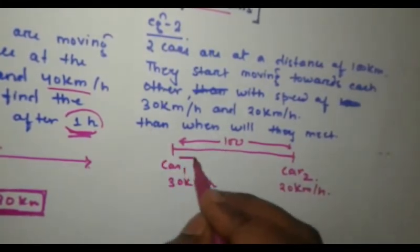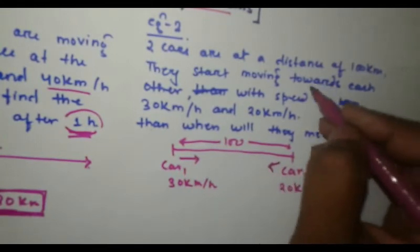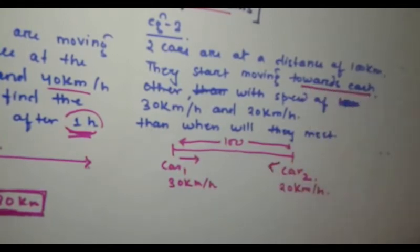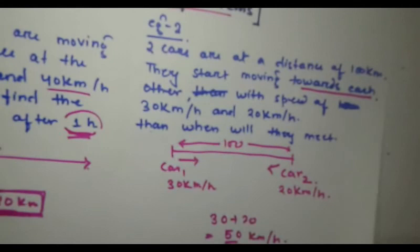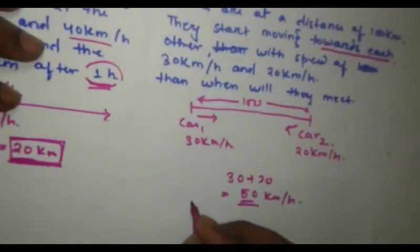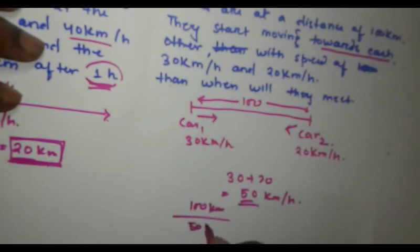They are moving towards each other. It is given over here that they are moving towards each other. So, the relative speed will be 30 plus 20. That is equal to 50. The relative speed is 50 km per hour. So, when will they meet? The distance is 100 km. Speed is 50 km. The time would be after two hours. So, they would meet each other after two hours.